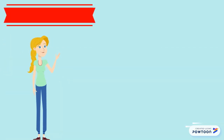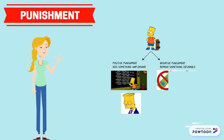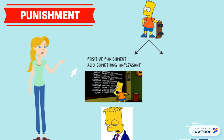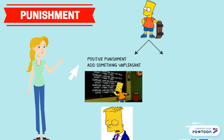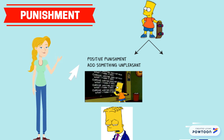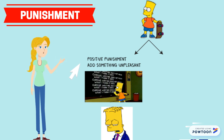Let's take a look at punishment. Imagine that Bart Simpson brings a skateboard to school even though it's not allowed. What if positive punishment was given to Bart? The teacher makes Bart repeat a tedious and repetitive task as a punishment. By giving Bart this punishment, as a consequence, it discourages Bart from bringing a skateboard into school again.